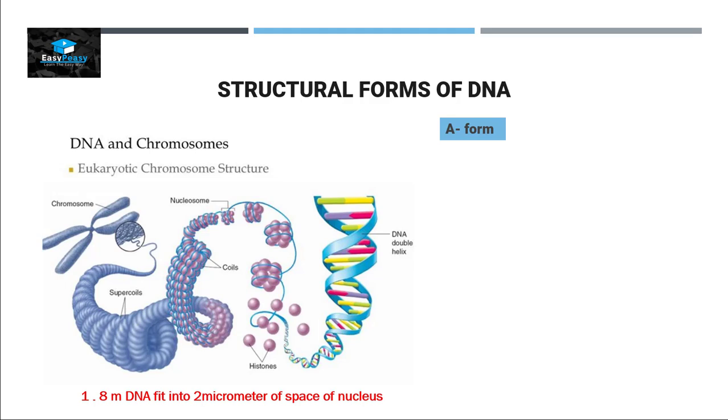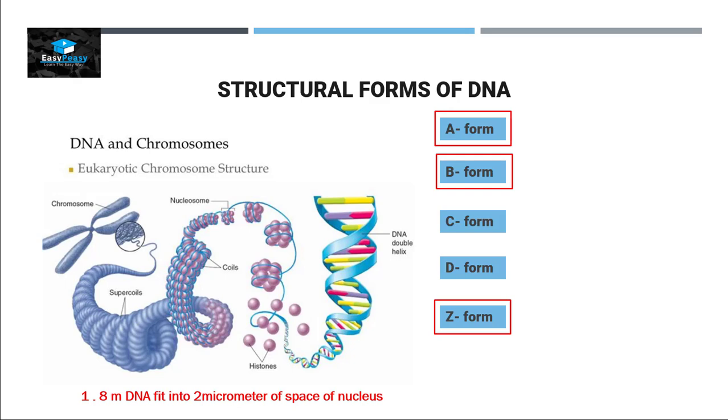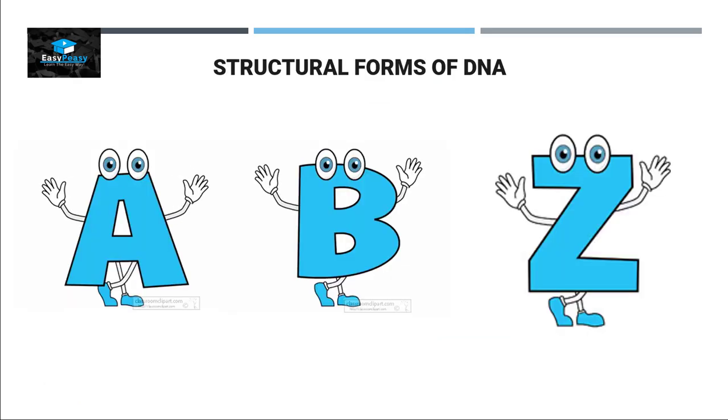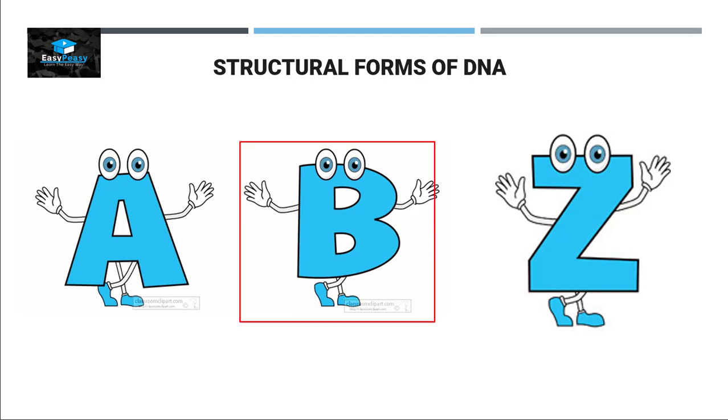That can be form A, B, C, D, and Z. Out of all these forms, A, B, and Z are more common and we are going to discuss these three forms in detail in this video. The most common form that is present inside the cell is form B, so we are going to discuss form B first, then form A, and then form Z.